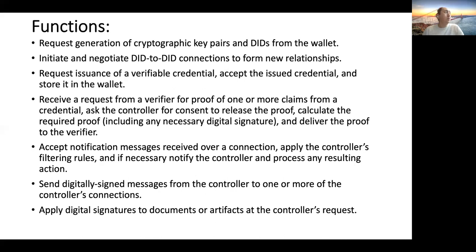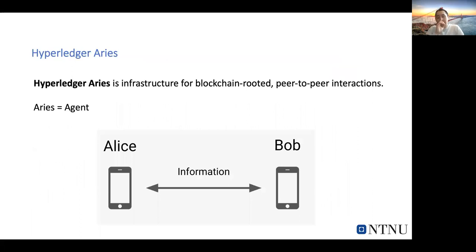You are the owner but you delegate some functions to the agent. You need to sign things and you hold the master key. Currently, tools like Hyperledger Aries are used to implement these agents. Hyperledger Aries is infrastructure for peer-to-peer interactions. To introduce it, let me first explain what Hyperledger is.